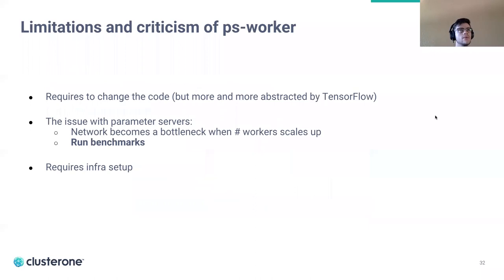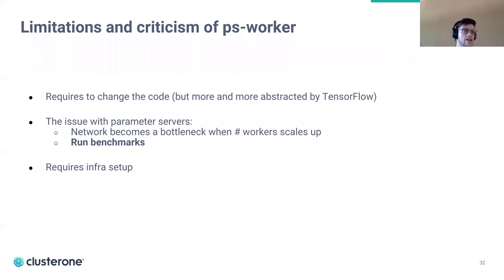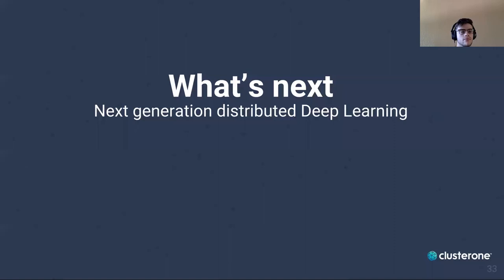The PS worker framework works quite well but does have some limitations. It requires code changes, though the TensorFlow API handles this better with each version. Parameter servers require tuning and benchmarking, and network typically becomes a bottleneck as the number of workers scales up. You also need the right infra setup and monitoring to make this happen. I can answer a few questions before going to my final part, which is what's next in distributed deep learning.